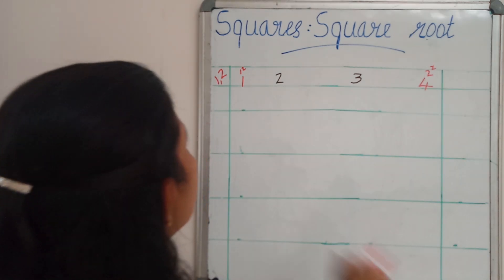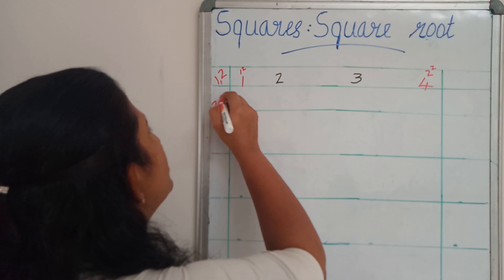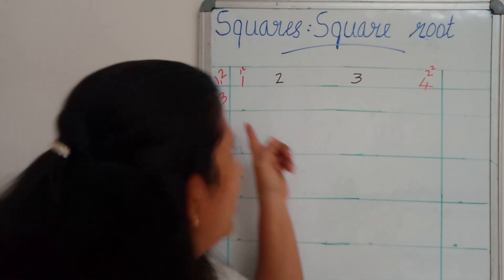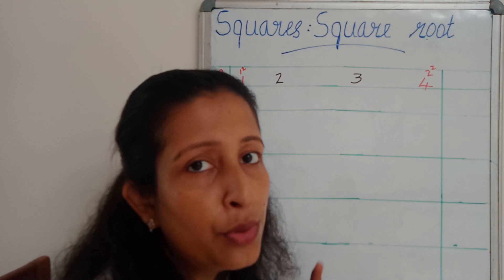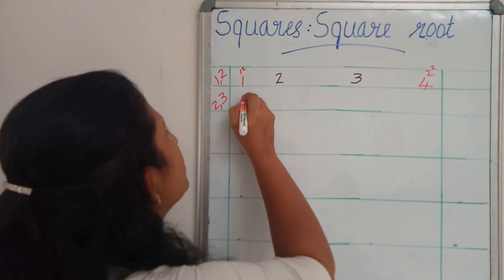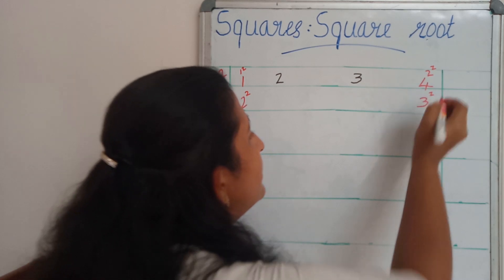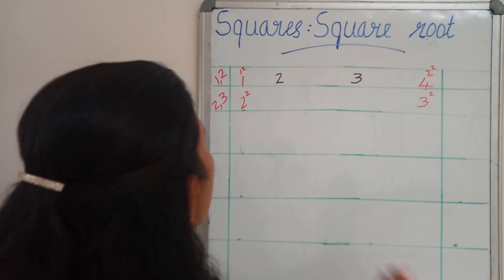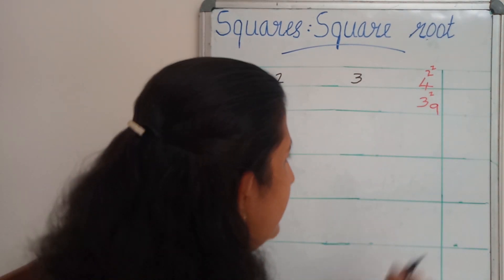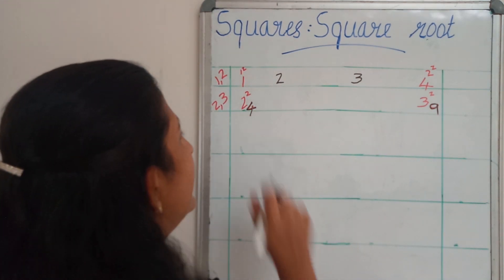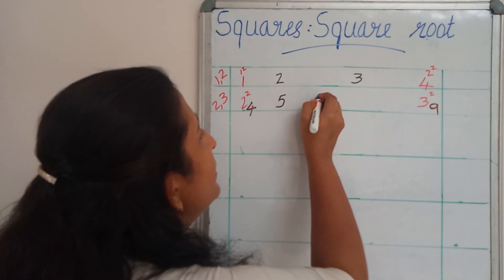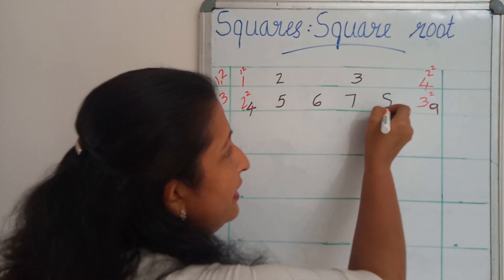Next, I am going to take the next two consecutive natural numbers: 2 and 3. In between 2 and 3, can you find any other natural number? No. In between 1 and 2, can you find any other natural number? No. That is why we are calling these numbers as consecutive natural numbers. Then 2 square and 3 square — what is the value of 2 square? That is 4, and 3 square is 9. In between 4 and 9: 5, 6, 7, 8.